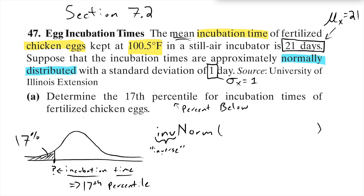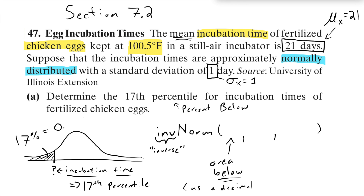Instead of telling the function what interval we want and it telling us the area, we're going to give it the area. The way this function works — especially on older calculators — is that you always give the percentile, which is the area below, as a decimal. So 17% becomes 0.17. That's what we put into INVNORM.